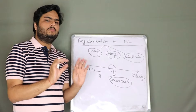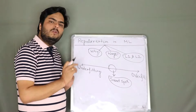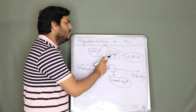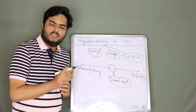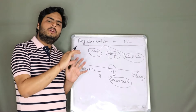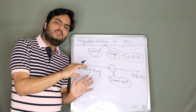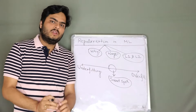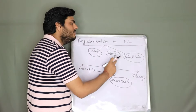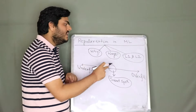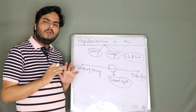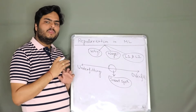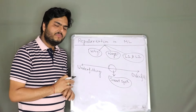We will see first why regularization is needed. Second, what are the different ways of regularization — when we talk of regression models, decision trees, deep learning. And third, we will go a little deeper into L1 and L2 regularization, also known as Ridge and Lasso regularization. Let's start one by one.